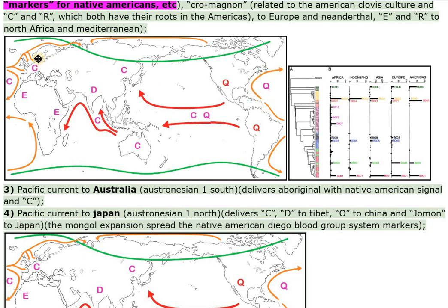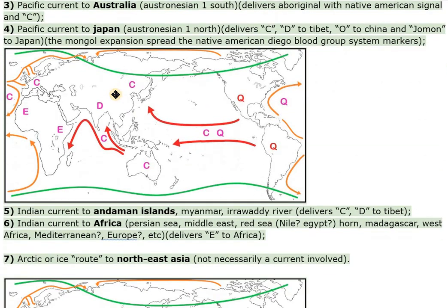Route 3: the Pacific Current to Australia — Austronesian 1 A and B — delivers Aboriginal populations with a Native American signal and haplogroup C. Route 4: the Pacific Current to Japan — Austronesian 1 North — delivers haplogroup C, D to Tibet, O to China, and Jamon to Japan. The Mongol expansion spread the Native American Diego blood group system markers. Route 5: the Indian Current to the Andaman Islands, Myanmar, and the Irrawaddy River delivers haplogroups C and D to Tibet.